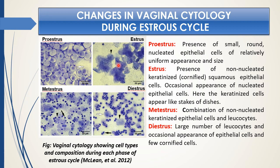The cornified squamous epithelial cells are characteristic of estrus. Then in the next phase, metestrus, keratinized epithelial cells are still present but they are infiltrated by leukocytes. In the last phase, diestrus — the longest phase in the cycle — we see only a large number of leukocytes and occasionally one or two nucleated epithelial cells. Therefore, it is very important to detect this particular cellular association, by which we can identify the stage of the estrus cycle.